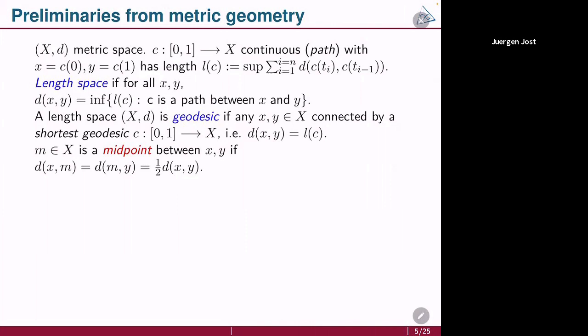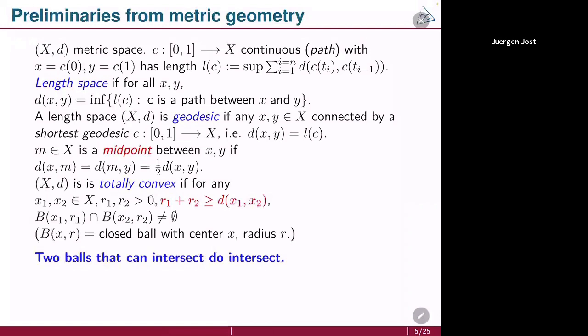If you have two points, we can ask whether they have a midpoint — that is, a point whose distance to either of them is equal to half of the distance between them. Of course, if you have a geodesic, you can just take the midpoint of the geodesic. A space is called totally convex if the following condition is satisfied: whenever you have balls about two points such that the sum of the radii is at least equal to the distance between those two points, then you require that these two closed balls have a non-empty intersection.